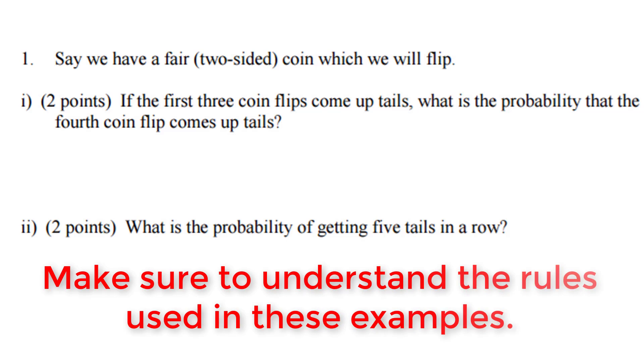These questions go over some important rules. The rule of independence, which allows us to multiply, is in part two. And the law of averages, which is a fallacy, is in part one.